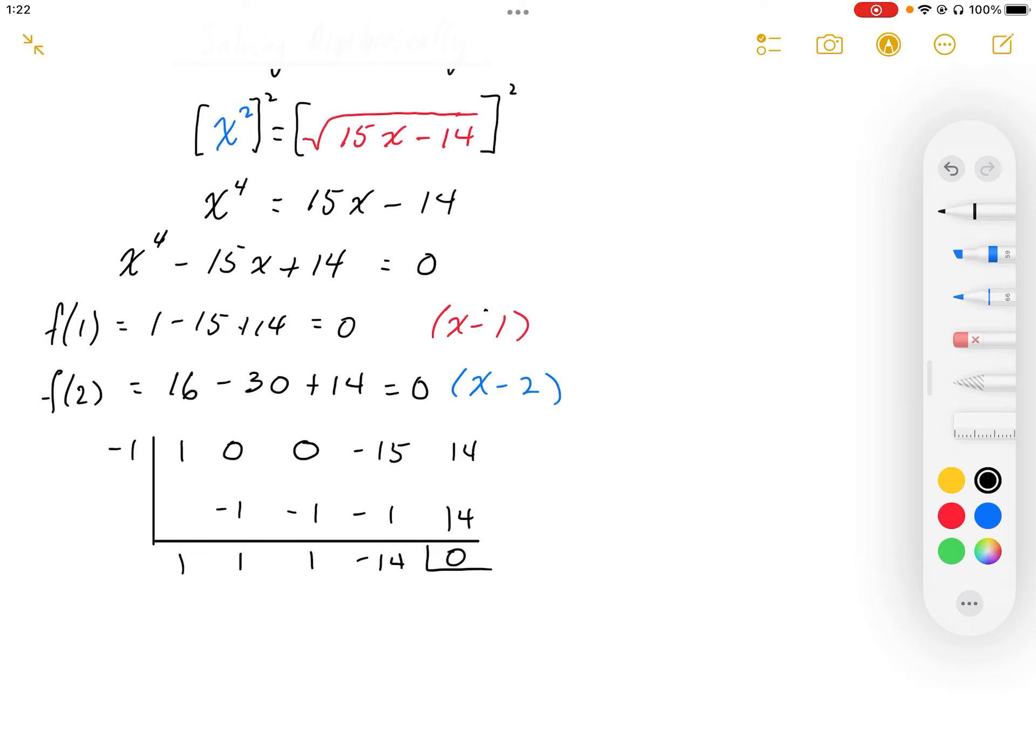And then I'm going to do this again. Maybe I'll color code this. This is from the negative 1 that I got. Okay, and then I'm going to do the same thing with the negative 2.